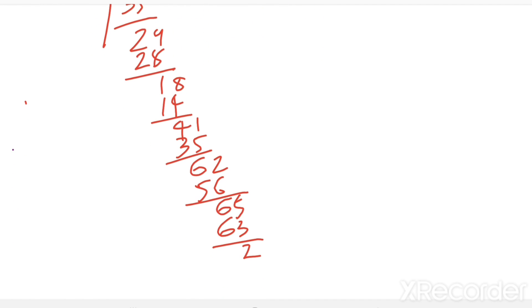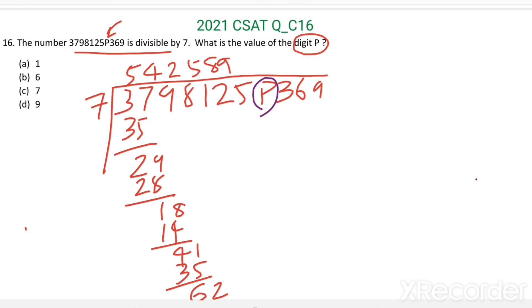Take this P here. Then in 2P, how many 7s are there? We don't know the value of P. But we know one of the options satisfying this condition, and that will be our answer.